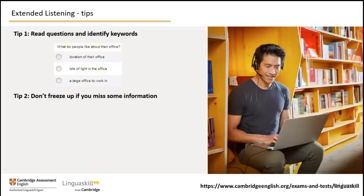In the example here, you need to listen for preference — that is, what the people like. You may hear information about all three options, but only one of the options will be something that people like — in other words, the correct answer. Test designers often paraphrase the words you hear in the audio when writing the test questions and options, so you may not hear the same words that you read.